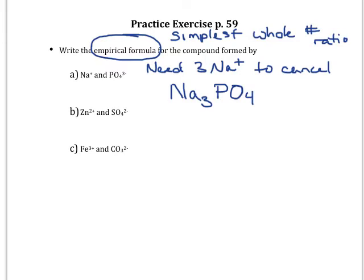We can do something similar for part B. Now I've got zinc with a two positive charge and I've got sulfate with a two negative charge. In this case, the charges match. The two positive directly cancels with the two negative.